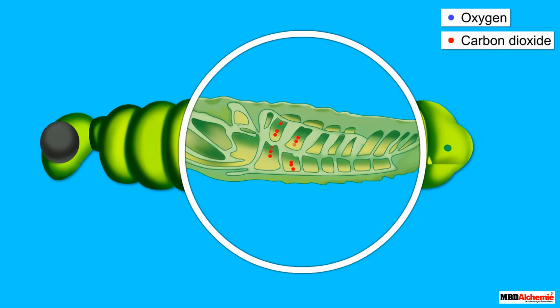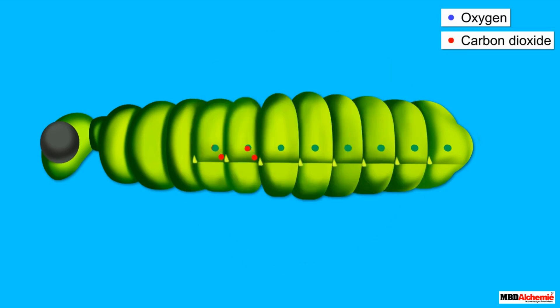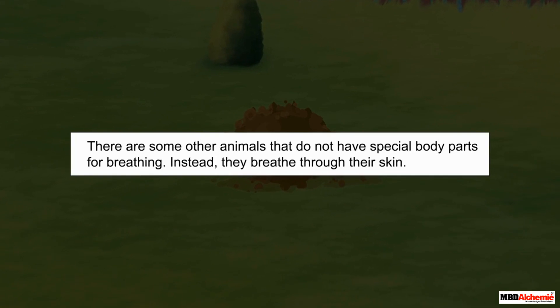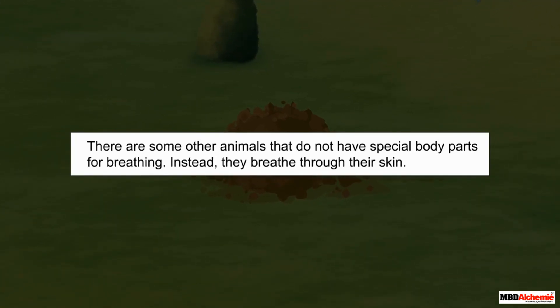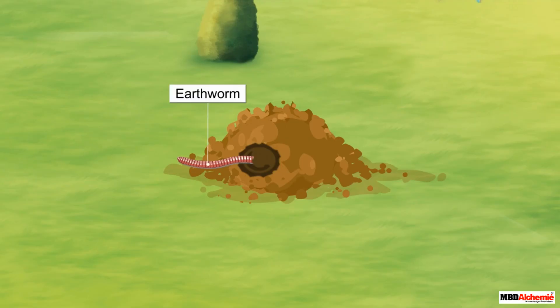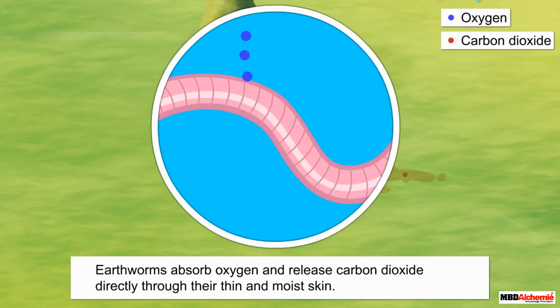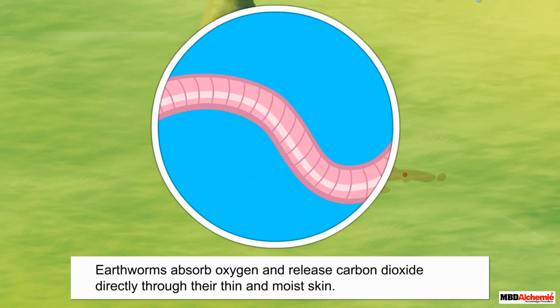Carbon dioxide is released and moves out of the body through the same path. There are some other animals that do not have special body parts for breathing; instead they breathe through their skin. For example, an earthworm absorbs oxygen and releases carbon dioxide directly through its thin and moist skin.